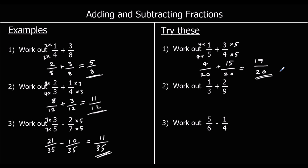For question two, we've got thirds and ninths, and the smallest number in both times tables is nine. You could multiply one-third top and bottom by nine and two-ninths top and bottom by three to get twenty-seven on the bottom, then simplify at the end. But the easiest way is to multiply top and bottom of one-third by three, which gives three-ninths. So we've got three-ninths plus two-ninths, which is five-ninths.